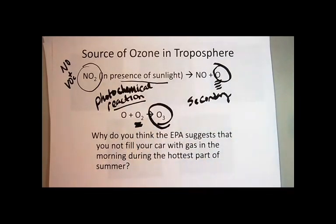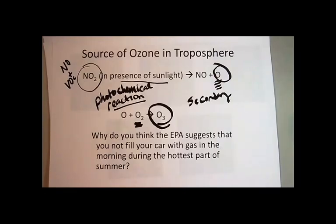Given all that information, why do you think the EPA suggests that you don't fill your car up with gas in the morning during the hottest part of the summer? A lot of times we'll hear on the radio that it's an ozone action day. What that means is there's a chance on that day that the weather conditions are right such that we're going to build up a lot of ozone during the day. It doesn't have anything to do with stratospheric ozone — it has everything to do with this very harmful pollutant. When you fill up your car with gas, especially in the summer, you can actually see the vapors of the gasoline coming out. More hydrocarbons are going to evaporate, putting more VOCs in the air.